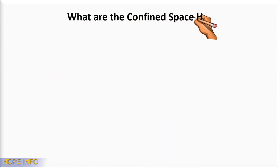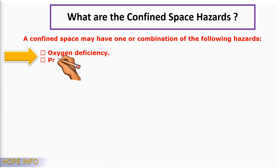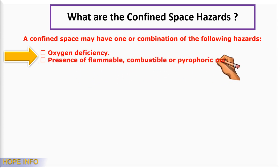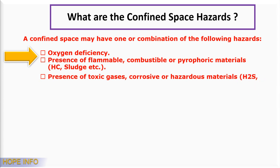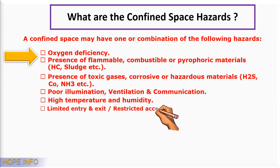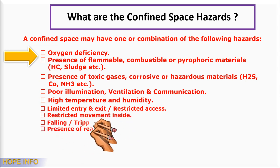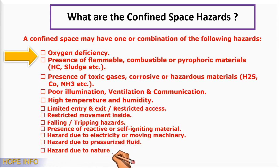What are the confined space hazards? A confined space may have one or a combination of the following hazards: oxygen deficiency; presence of flammable, combustible, or pyrophoric materials; HC and sludge; presence of toxic gas; corrosive or hazardous materials like H2S, CO, and NH3; poor ventilation and communication; high temperature and humidity; limited entry and exit; restricted access; restricted movement inside; falling or tripping hazards; presence of reactive or self-igniting materials; hazards due to electricity or moving machinery; hazards due to pressurized fluid; and hazards due to the nature of work carried out inside the confined space.